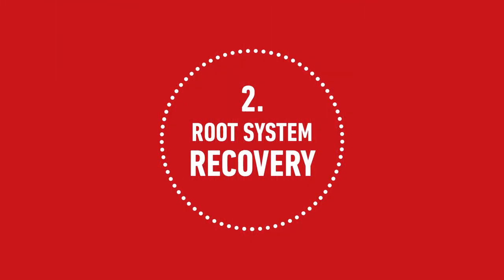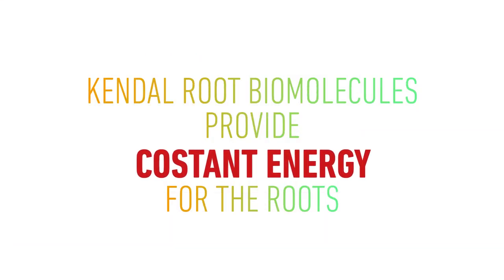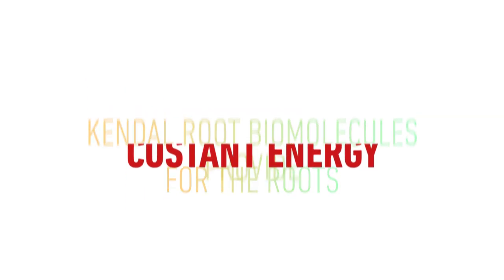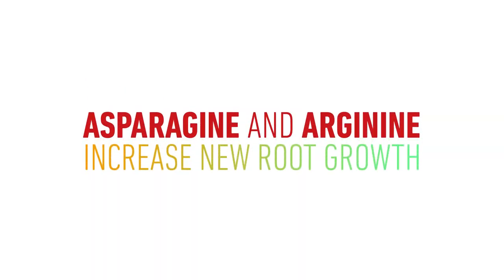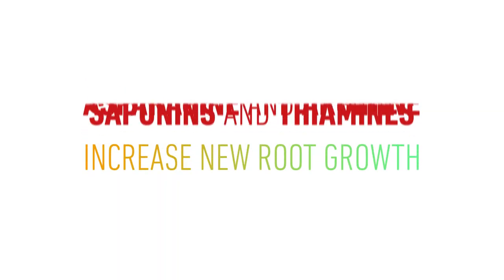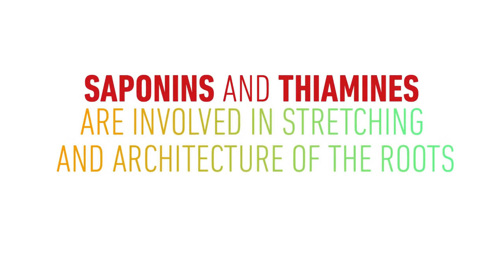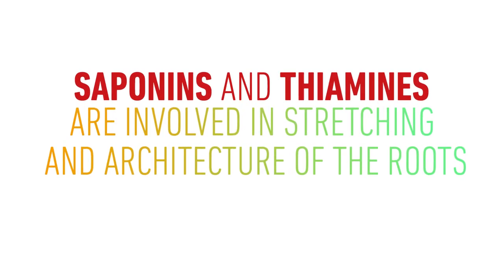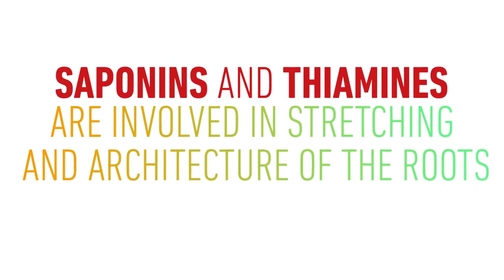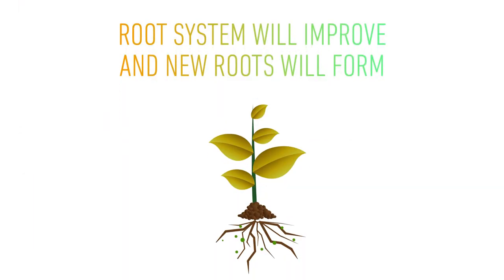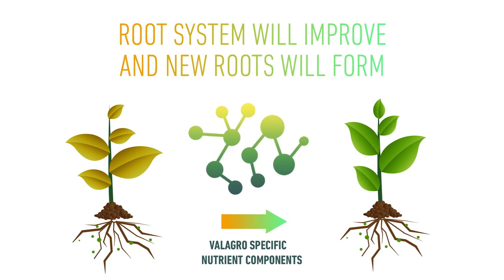Root system recovery. Kendal Root biomolecules provide constant energy for the roots. Asparagine and arginine increase new root growth, while saponins and thiamines are directly involved in the process that determines the stretching and architecture of the roots. That's how root system will improve and new roots will form.